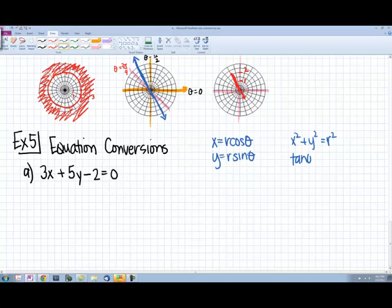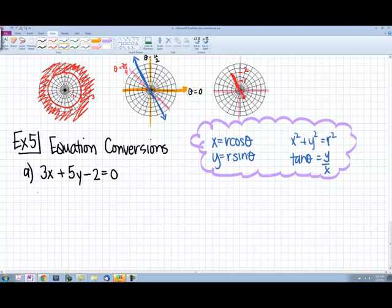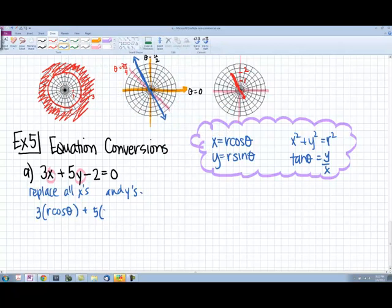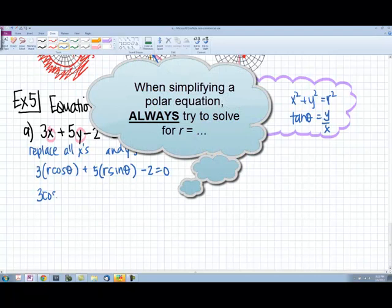I want to write this equation in polar form, so that means I want to replace all the x's and the y's. So I'm going to write this out as 3 times r cosine theta plus 5 times r sine theta minus 2 equals 0.